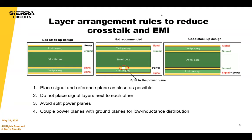Layer arrangement is also important. In a first stack-up example, signal layers are adjacent to each other, which is prone to crosstalk and EMI, with the ground plane further away. In the second example, the clearance between power and ground plane is very high and there's a split in the power plane. The third stack-up would perform the best. Place signal and reference planes as close as possible together, do not place signal layers next to each other, avoid split reference planes, and couple power planes with ground planes for low inductance distribution.